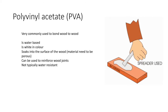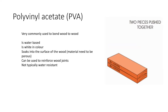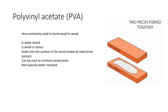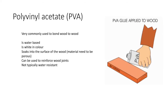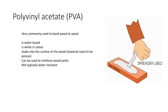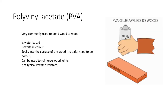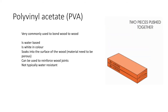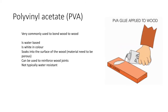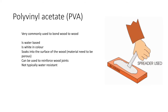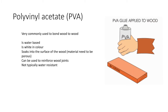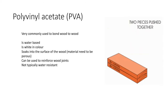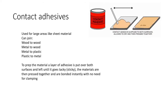The first adhesive is PVA — full name polyvinyl acetate. It's most commonly used for wood-to-wood bonding. It's water-based, white in colour but dries clear. It sinks into the surface, so the material must be porous — meaning it has very fine holes that the glue soaks into. You can reinforce it with wood joints or screws. Standard PVA is not water resistant, so it will fail if left outside in the rain. This is why you couldn't use PVA to bond acrylic to MDF — it can't soak into the acrylic.